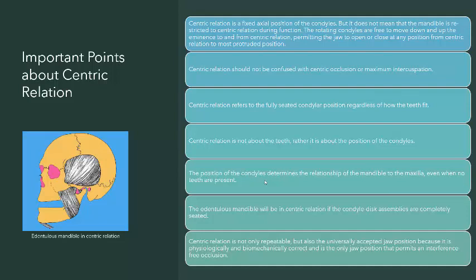The position of the condyles determines the relationship of the mandible to the maxilla even when no teeth are present. The edentulous mandible will be in centric relation if the condyle-disc assemblies are completely seated. Centric relation is not only repeatable but also universally accepted because it is physiologically and biomechanically correct and is the only jaw position that permits an interference-free occlusion. If there are interferences in centric occlusion, the mandible is going to be deflected.